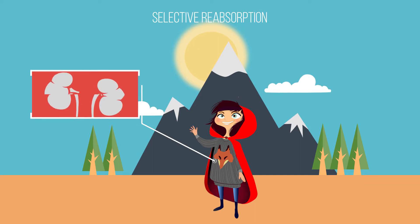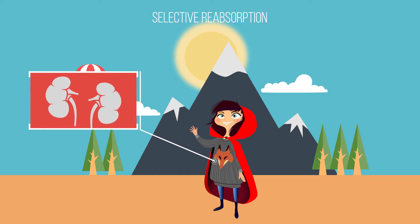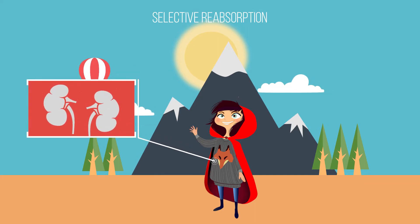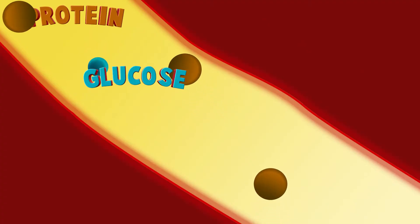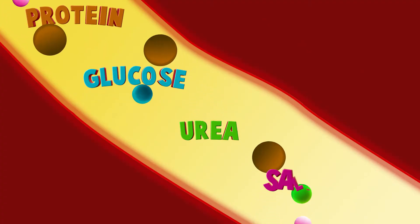Blood plasma contains many dissolved solutes, including protein, glucose, urea, and salts.